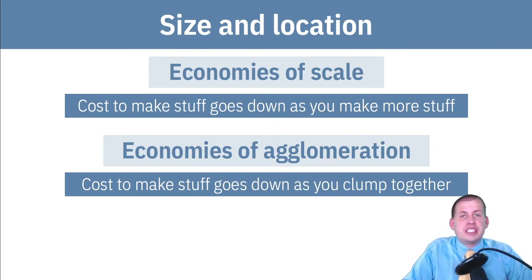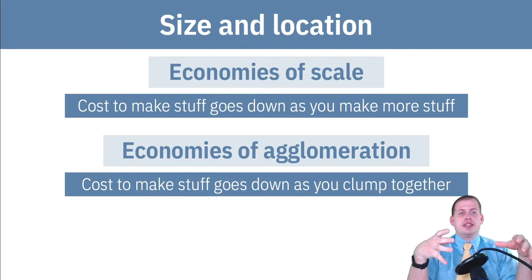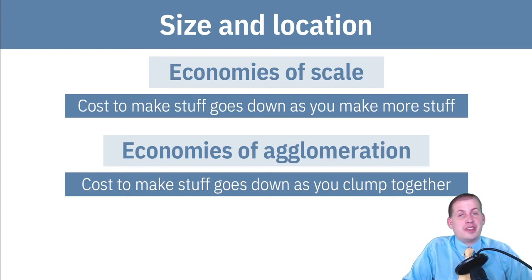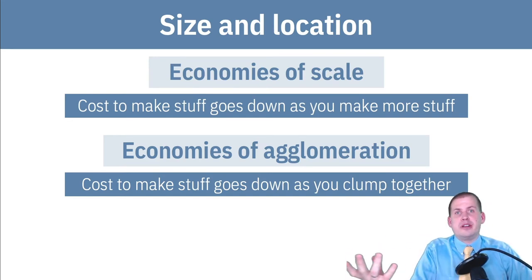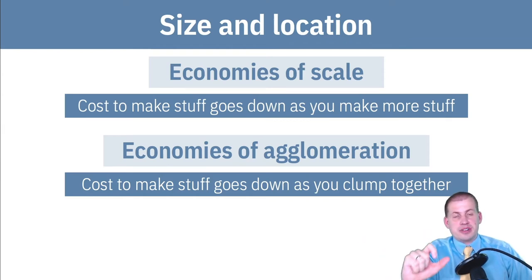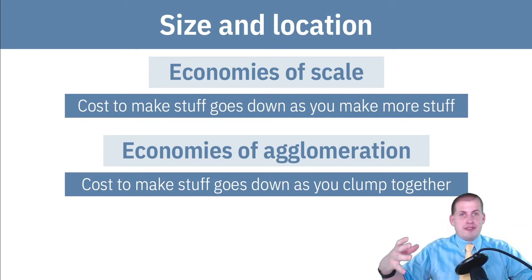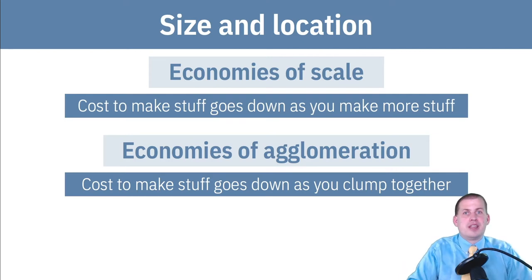Next we have economies of agglomeration — the idea that as firms start clumping together, it actually makes it cheaper for them to do stuff. A classic example is Detroit back in the 1930s through 60s, when all the major American car companies were based there. If you wanted to create steering wheels and supply Ford or Chevrolet or Dodge, it was really wise to set up shop in Detroit so you could just send your parts across the street to the factories, minimizing your costs.